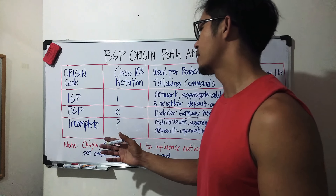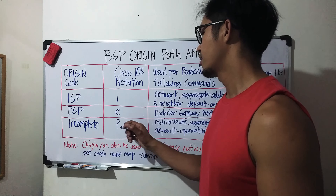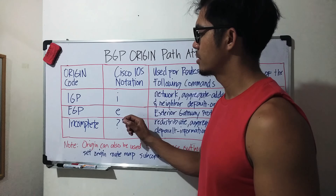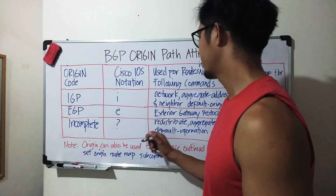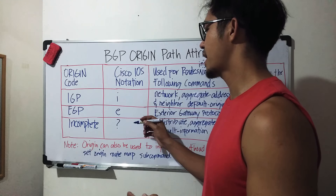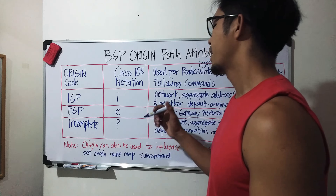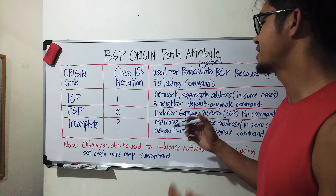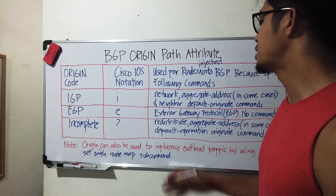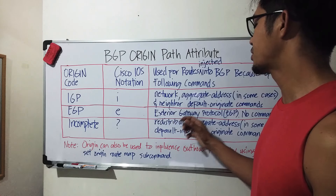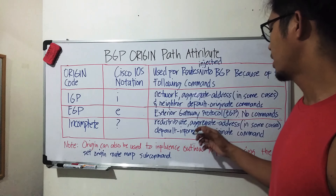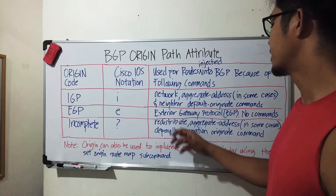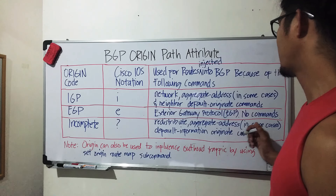And Incomplete — this has a notation of question mark '?'. If you see a route that has a question mark, that means that route was injected into BGP using the redistribute command, or aggregate address in some cases, and the default-information-originate command.